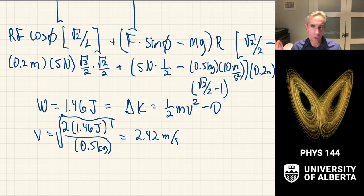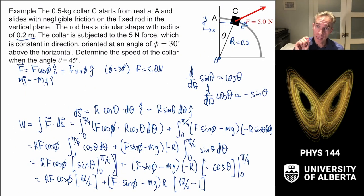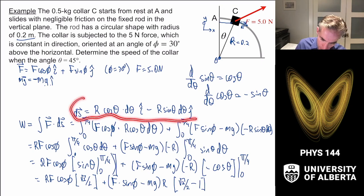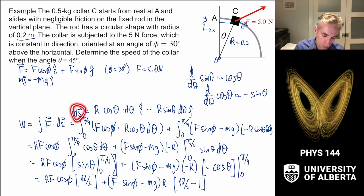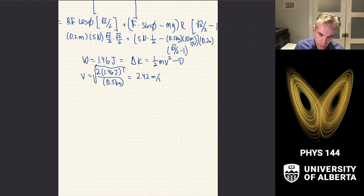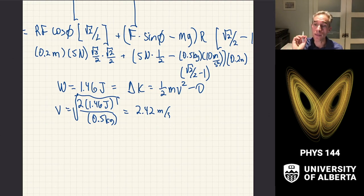The point of this derivation was to illustrate how to treat motion along a known curved path. A circular path is very common; we express ds in vector components using trig functions of the angle, carry out the dot product, integrate over the angle, and obtain the final speed.